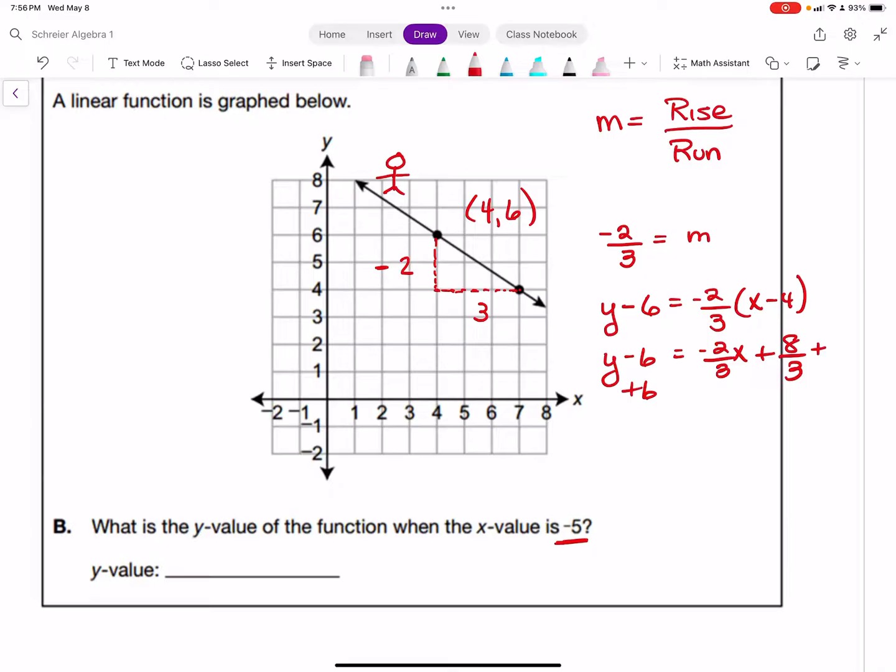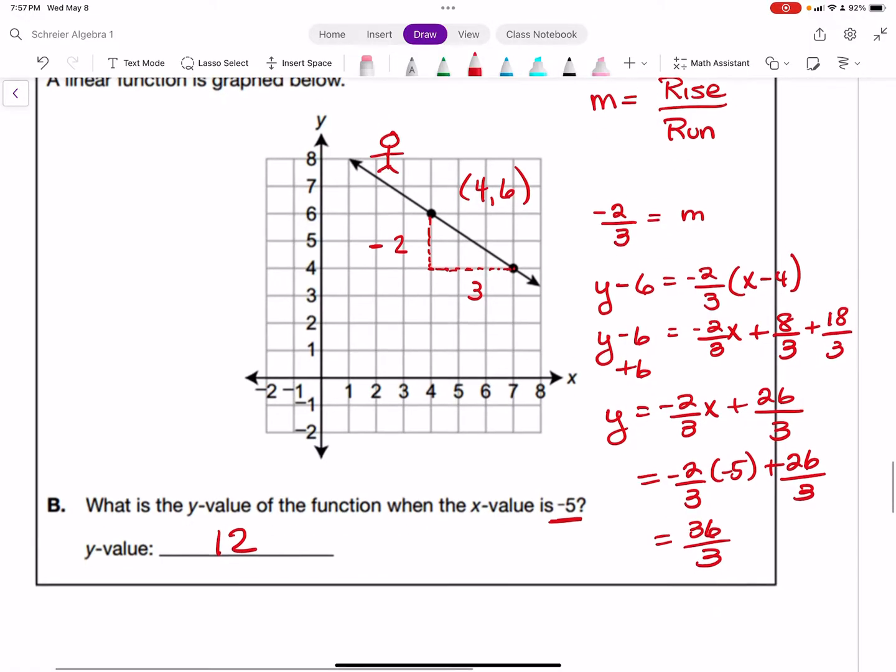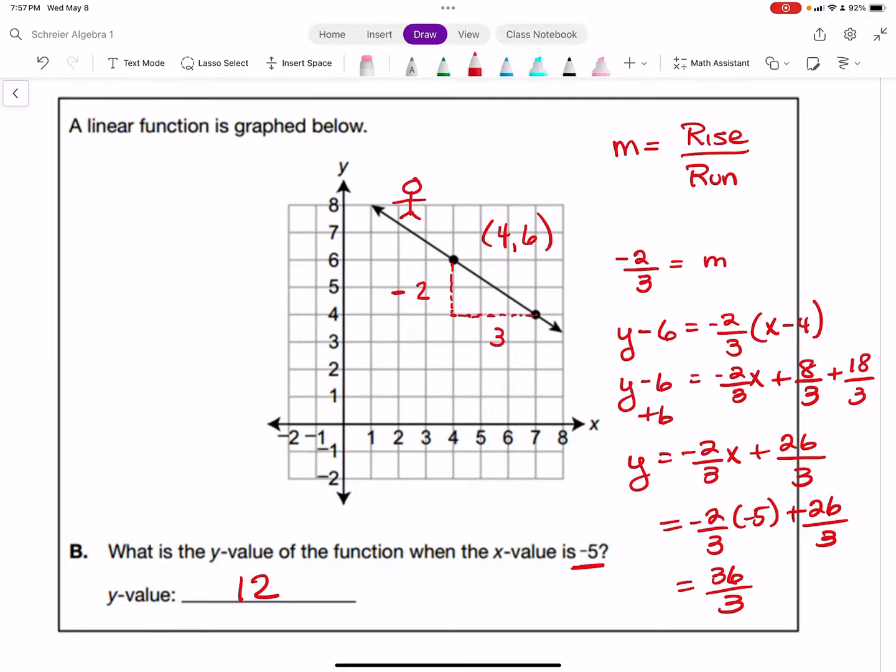Then plug in -5: -2/3 times -5 plus 26/3. That's 10/3 and 26/3, which is 36/3, which is 12. So our y value is 12. You can also guesstimate by extrapolating the line up - you can see it's going to be over 8.